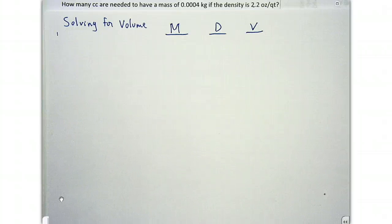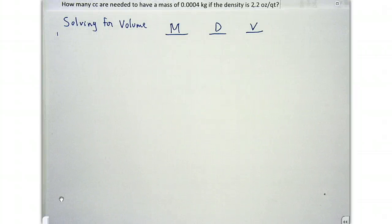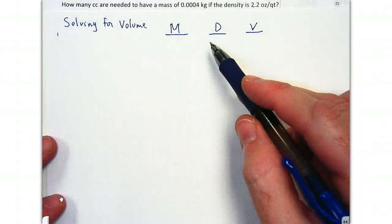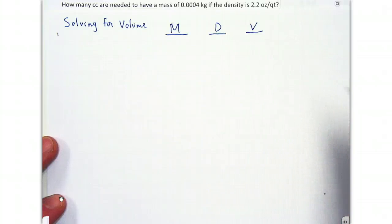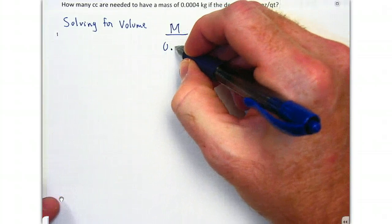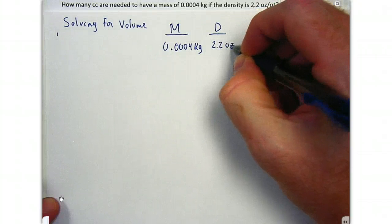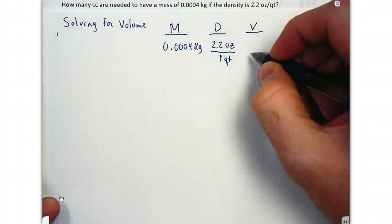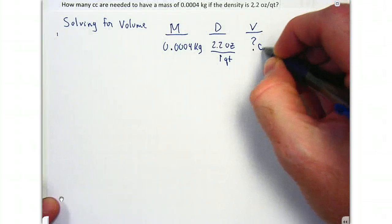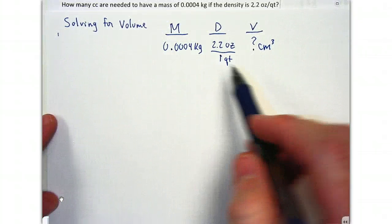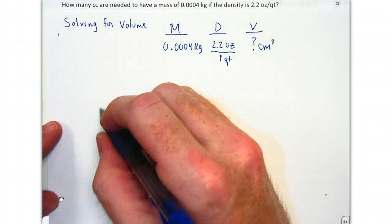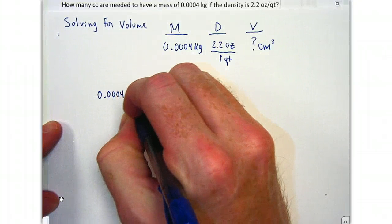In our final problem we'll be solving for volume. It states: how many cubic centimeters are needed to have a mass of 0.0004 kilograms if the density is 2.2 ounces per quart? This works just like the mass problem — we work from mass through density to get to volume. Our given is 0.0004 kilograms for mass, density is 2.2 ounces per quart, and volume is an unknown amount of cubic centimeters. We take the mass — the given — 0.0004 kilograms, and put it over one.